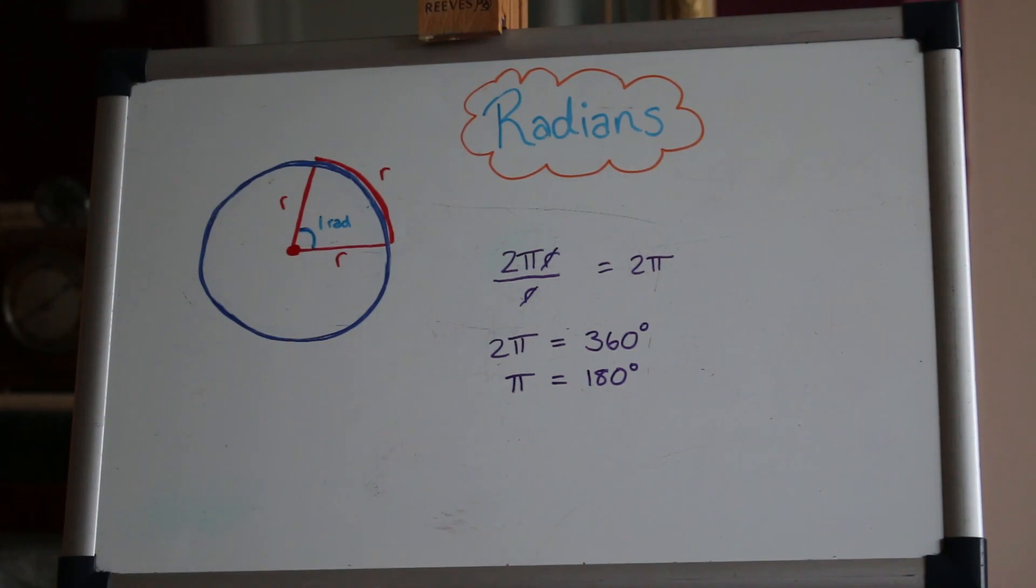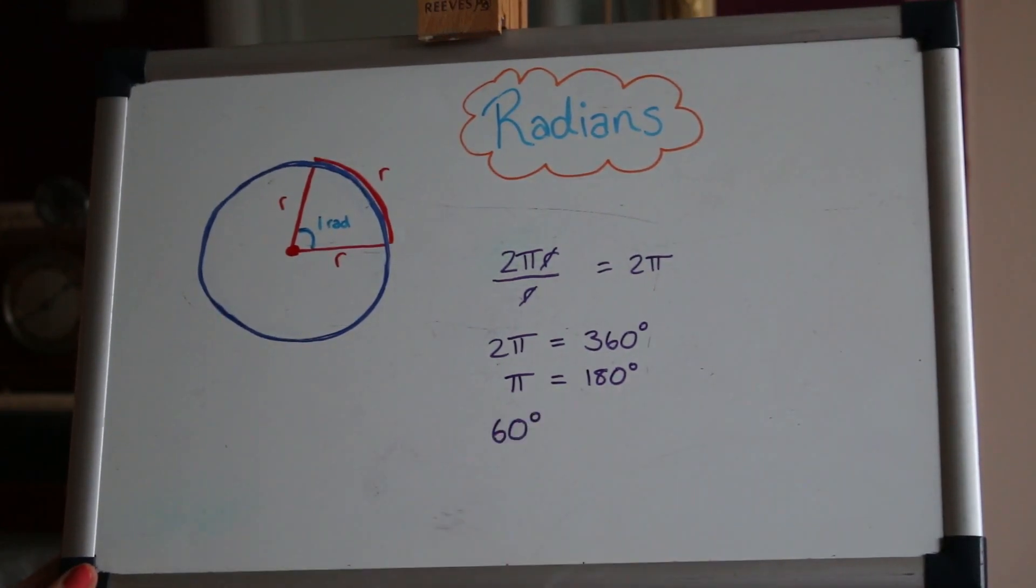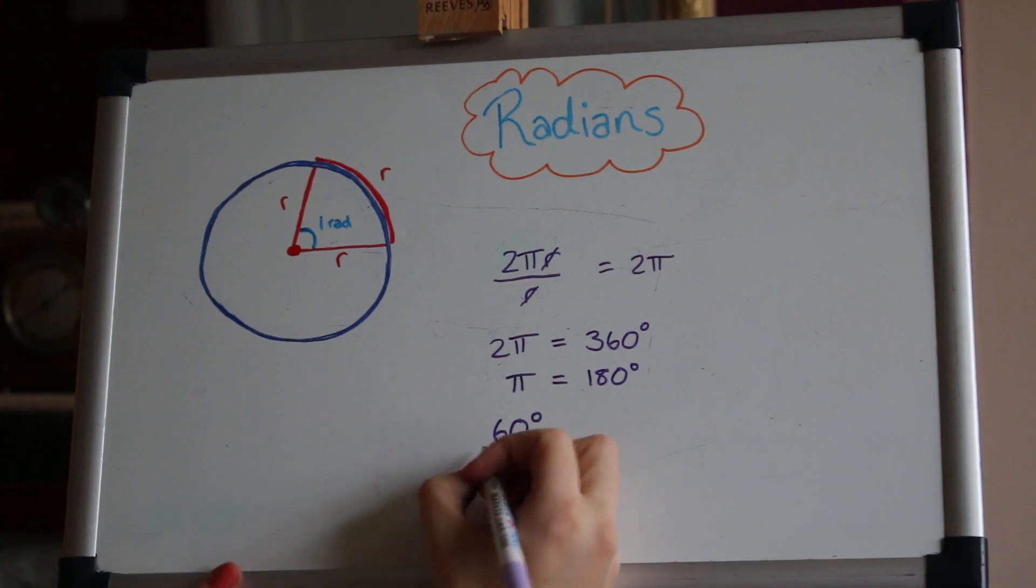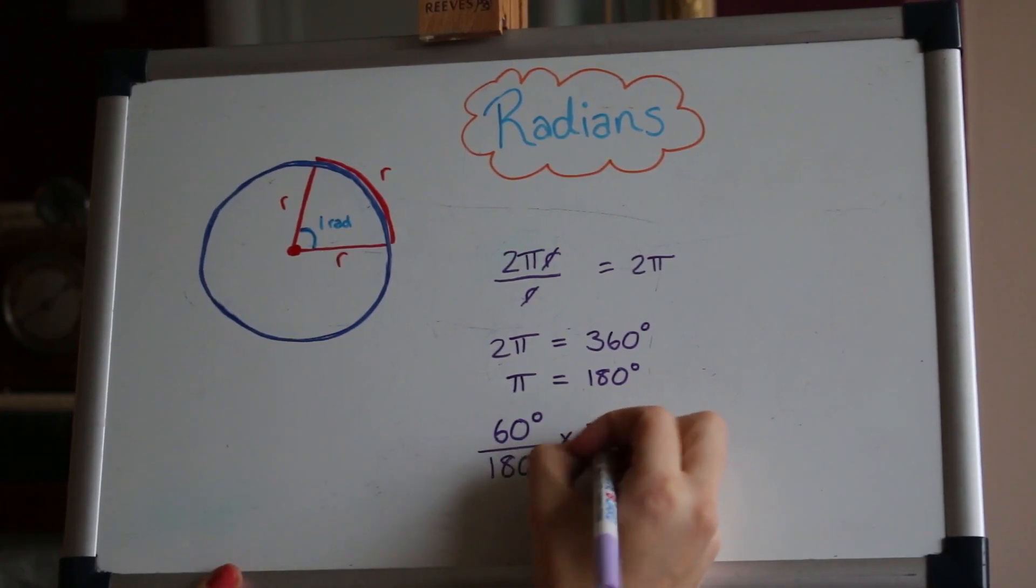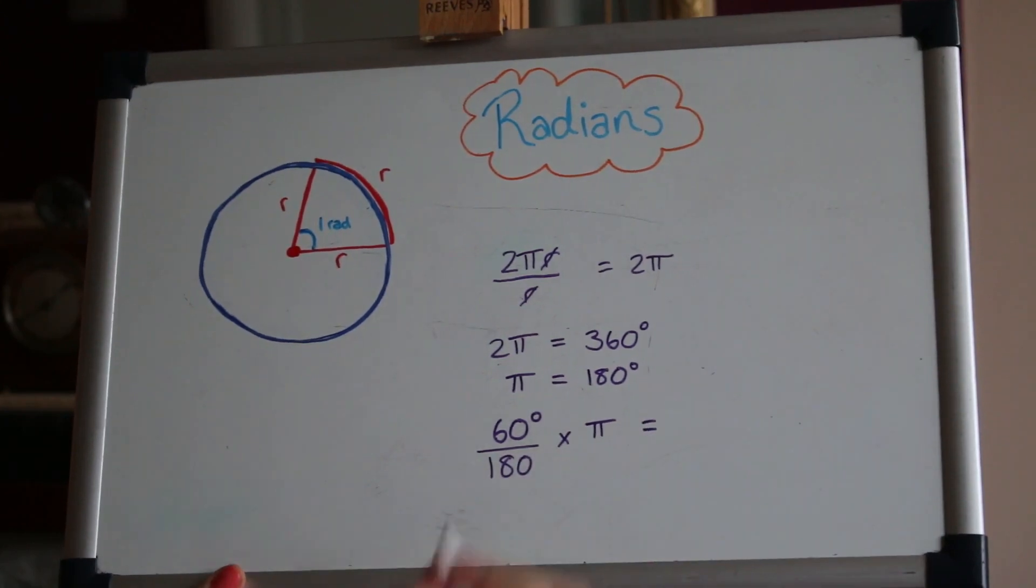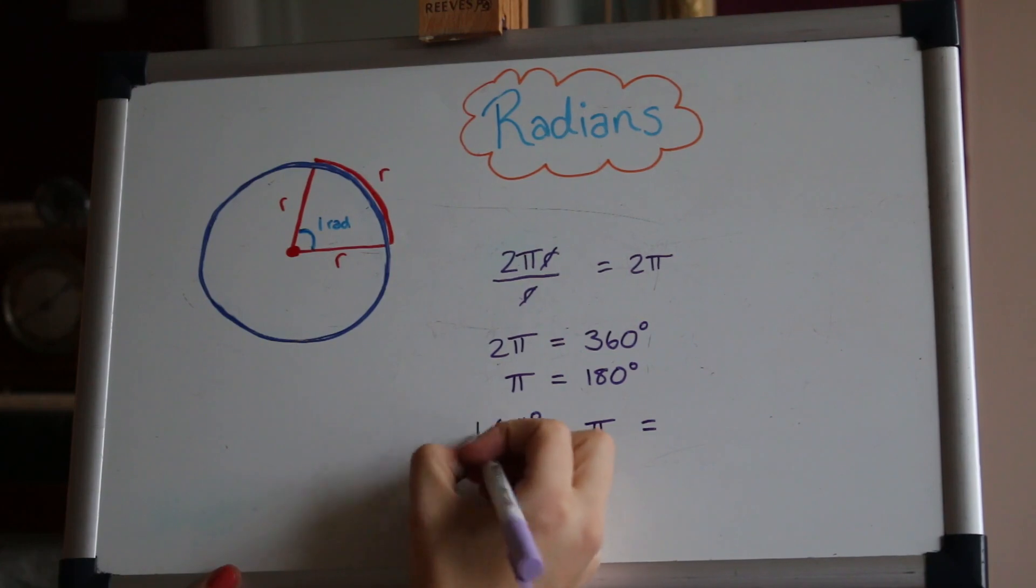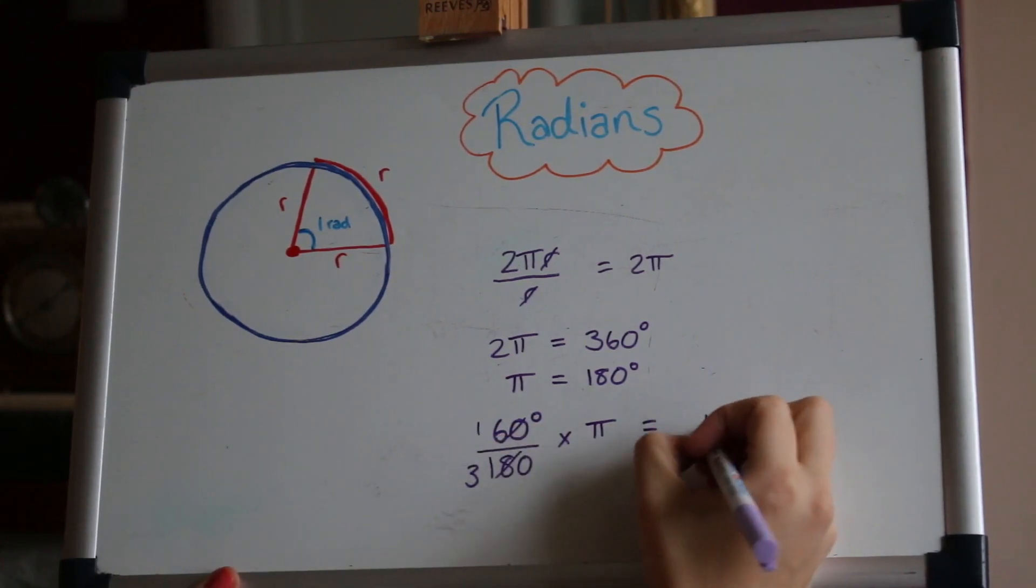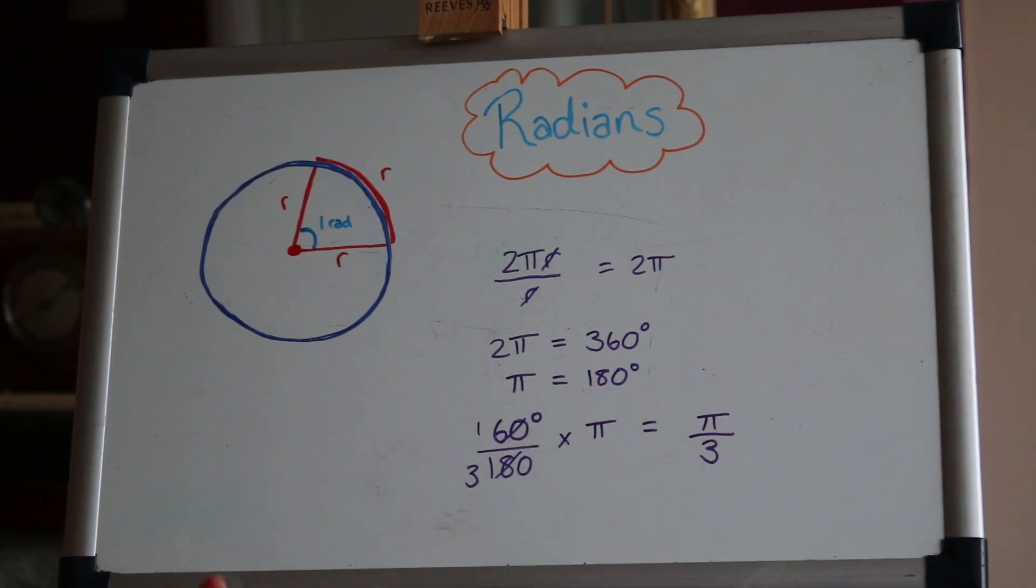So for example if we have 60 degrees and we want that in radians, then we can divide by 180 and times π. That fraction there will simplify down to a third. So 60 degrees is the same as a third π radians or π over 3.